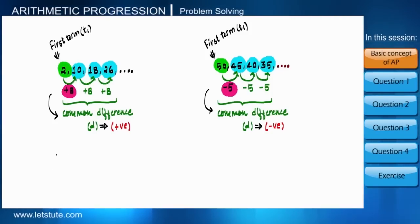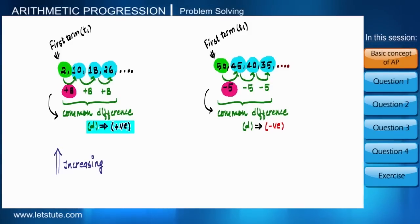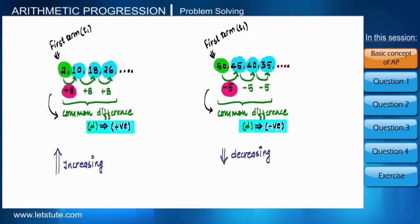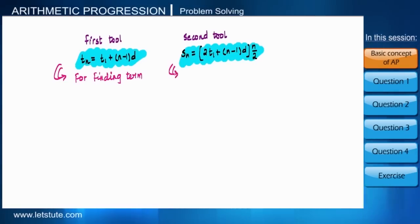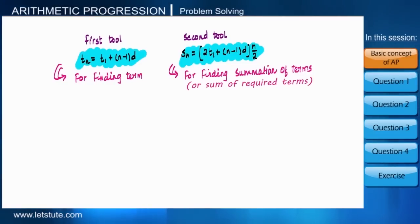We must note that if the sequence is increasing, the common difference is positive, and if the sequence is decreasing, the common difference is negative. Previously we also learned two basic tools: one for obtaining any term of the sequence, and the other for calculating the summation of all the terms. In this session we will focus on the first formula only.